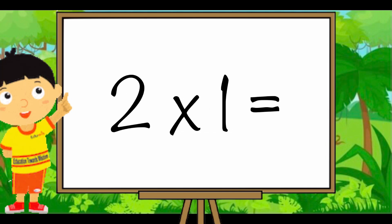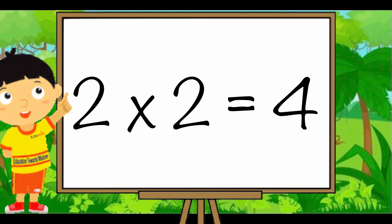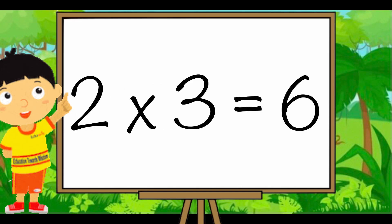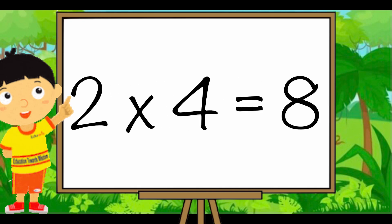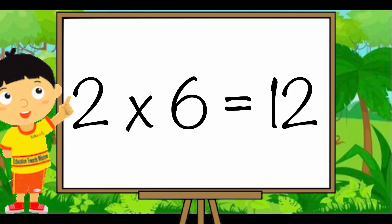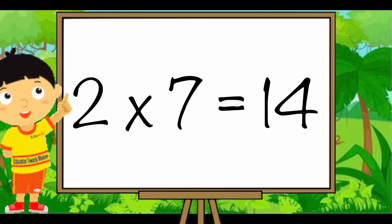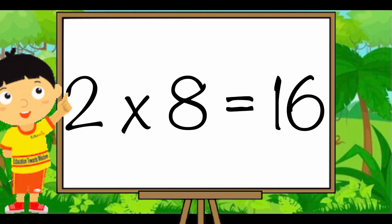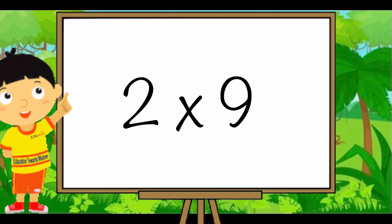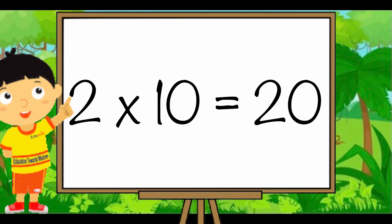Open your books and repeat with me. Two ones are two. Two twos are four. Two threes are six. Two fours are eight. Two fives are ten. Two sixes are twelve. Two sevens are fourteen. Two eights are sixteen. Two nines are eighteen. Two tens are twenty.